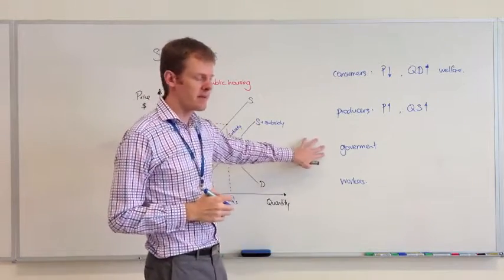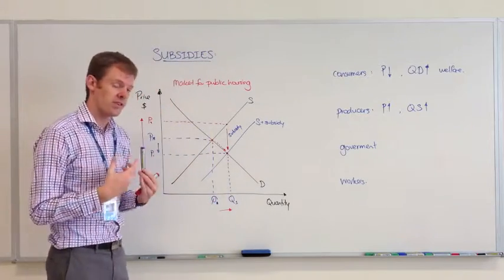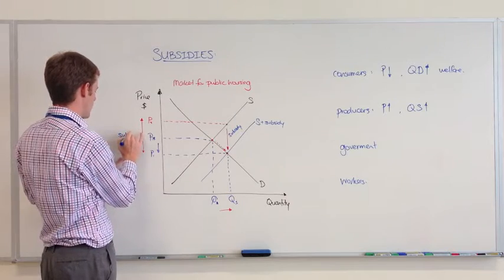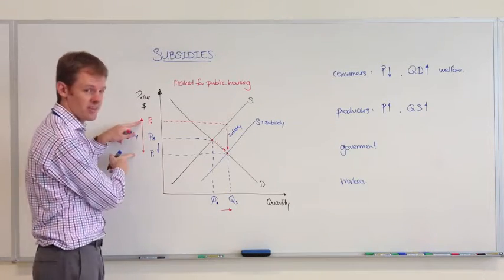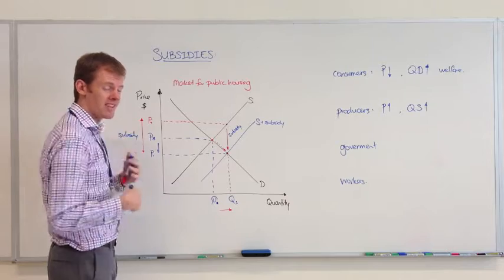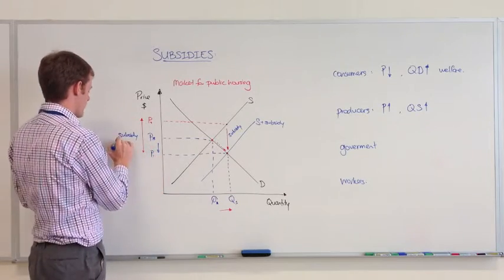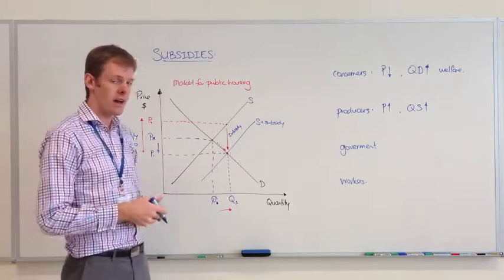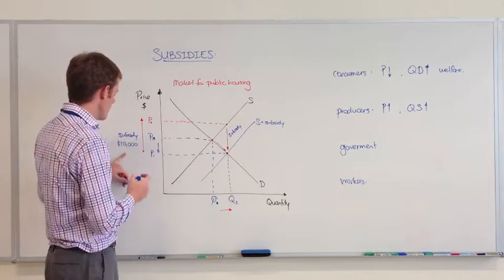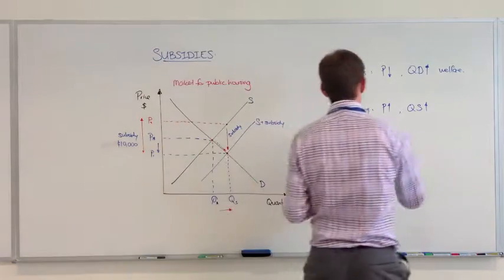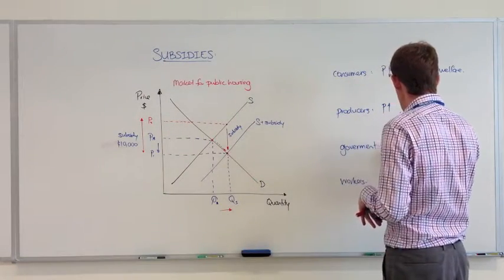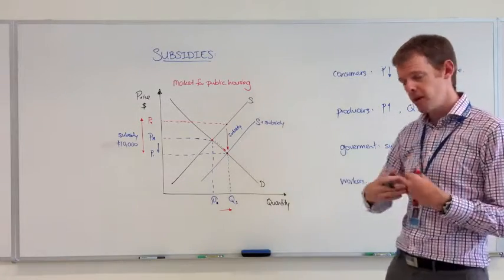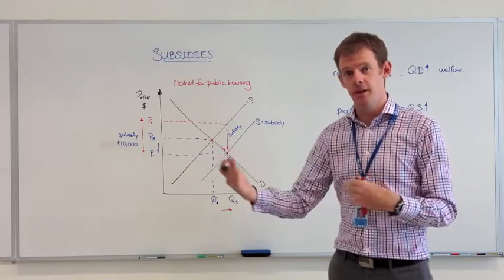To achieve this, the government has to offer this thing called a subsidy. The subsidy here is the distance between here and here. On a house, the subsidy might be, say, $10,000. It could be $10,000 or a few thousand dollars on a house.